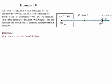Example 3.8. In this example we have air flowing steadily from a tank through a hose of given diameter, and it exits to the atmosphere using a nozzle whose diameter is also given. The pressure of the tank remains constant at three kilopascals gauge, and the atmospheric conditions are standard temperature and pressure. We need to determine the flow rate and the pressure of the hose at the different points.